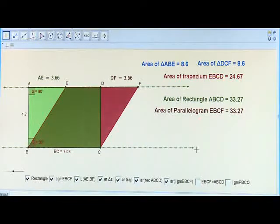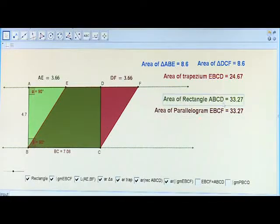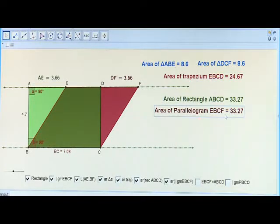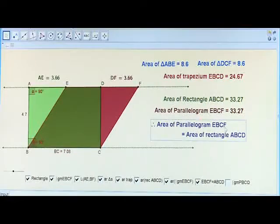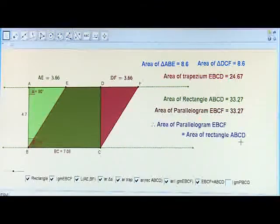Now what do you observe here? The area of rectangle ABCD is the same as the area of parallelogram EBCF. So we can say that area of parallelogram EBCF is equal to area of rectangle ABCD.